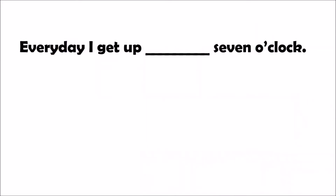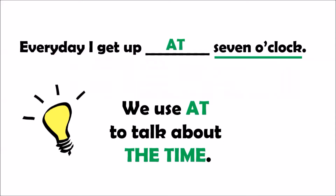Look at this sentence: every day I get up at seven o'clock. What do you think we need to use here — in, on, or at? Can you write it on the chat? Yes, very good. We are going to say: every day I get up at seven o'clock. We use 'at' to talk about the time. For example, seven o'clock — at seven o'clock.